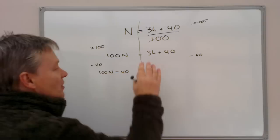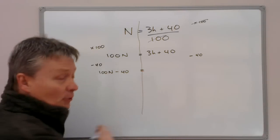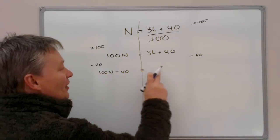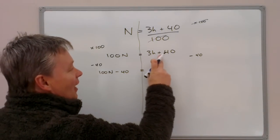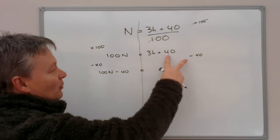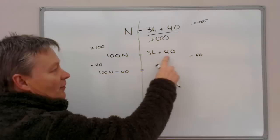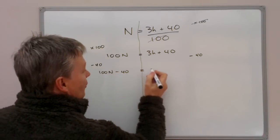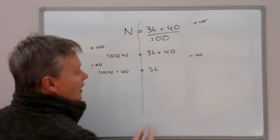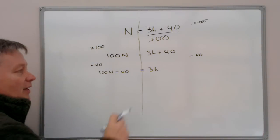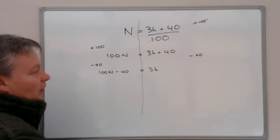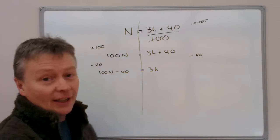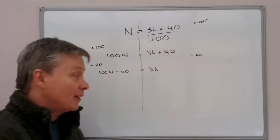OK. On this side, remember the equal sign in the middle. On this side, I've got 3H add 40, take away 40. Well with those two, plus 40 take away 40 means I've got nothing. So that would be 3H. So this term will give me 3 values of H, or 3 times H.